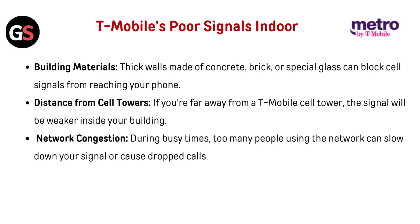T-Mobile's poor signals indoors can be caused by building materials — thick walls made of concrete, brick, or special glass can block cell signals from reaching your phone. Distance from cell towers also matters: if you are far away from a T-Mobile cell tower, the signal will be weaker inside your building. Additionally, during busy times, network congestion — too many people using the network — can slow down your signal or cause dropped calls.